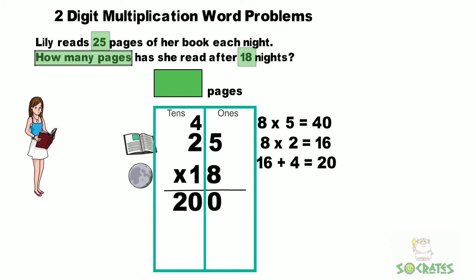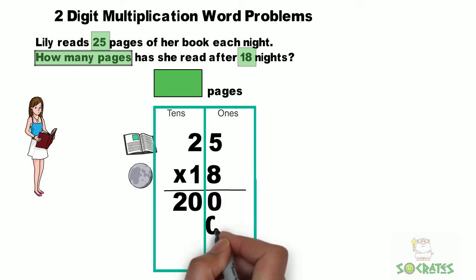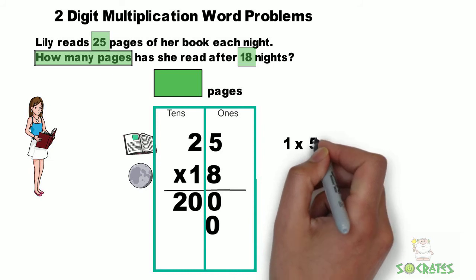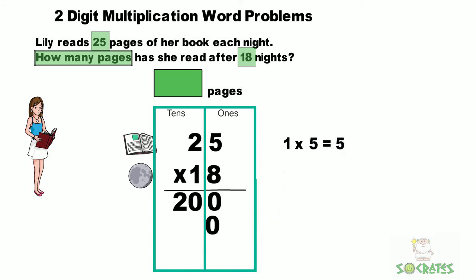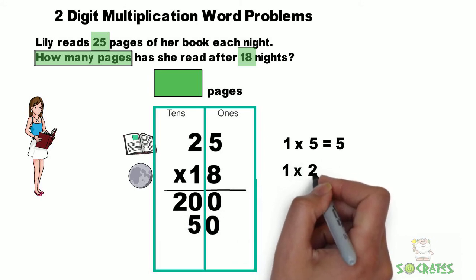Next, we need to multiply the tens. So we put a zero to mark our tens place. Then we multiply 1 times 5, which equals 5, and we multiply 1 times 2, which equals 2.